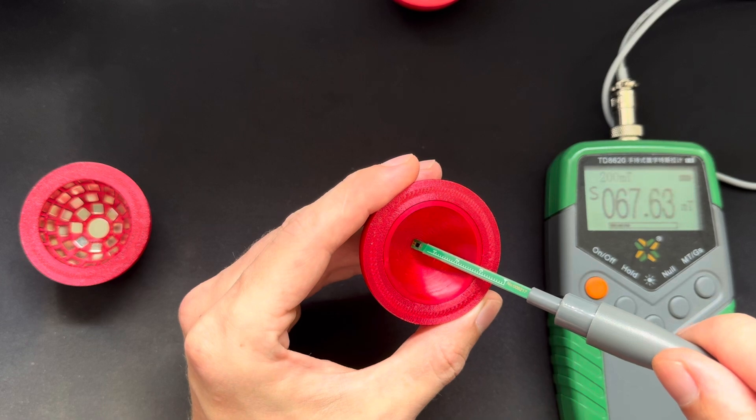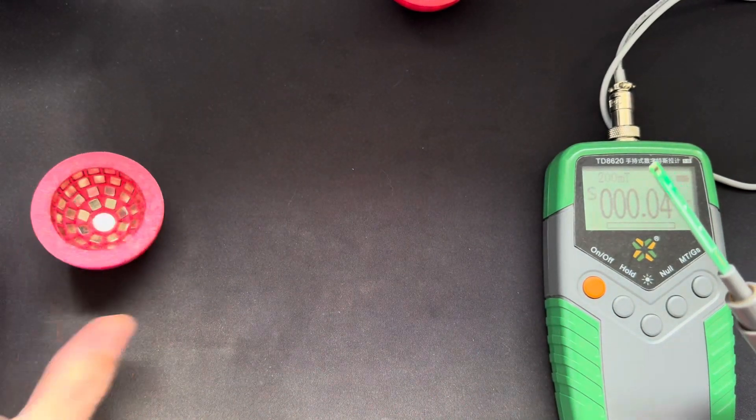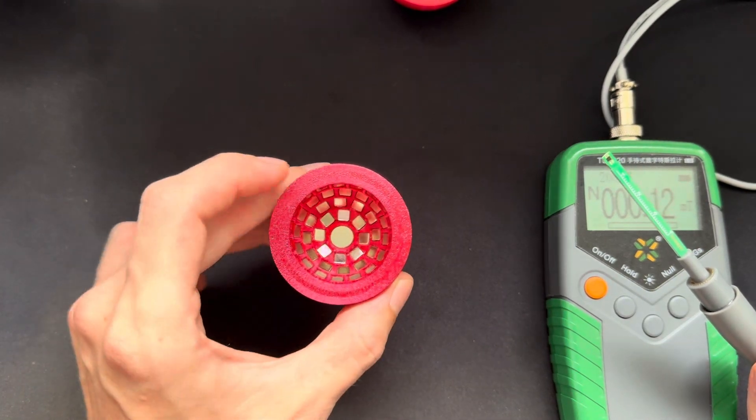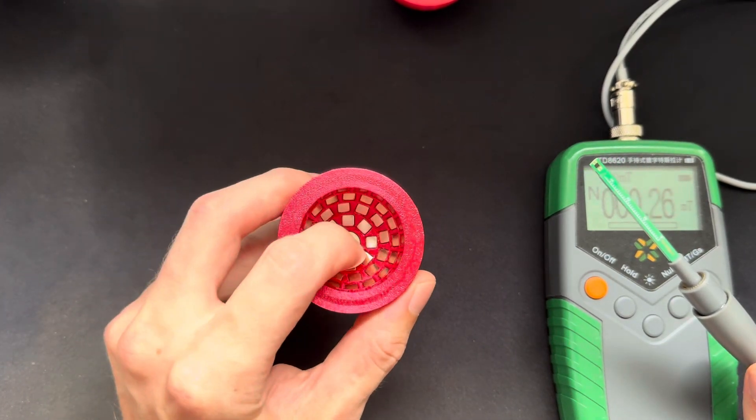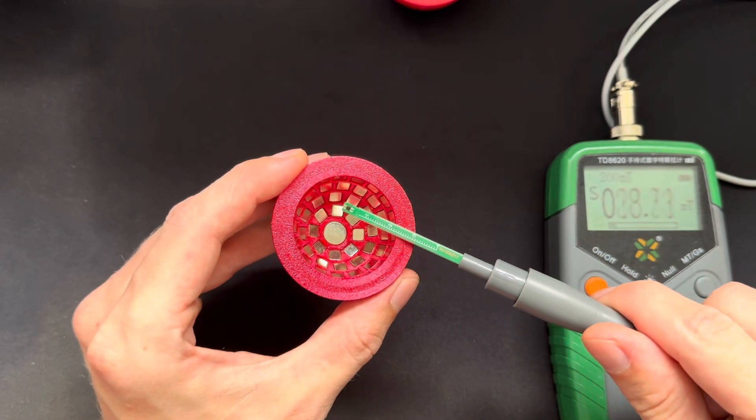You can see the field strength is not that strong compared to if I take this one where the disc magnet is of opposite direction meaning north pole inside here. You can see all around here we have south pole.